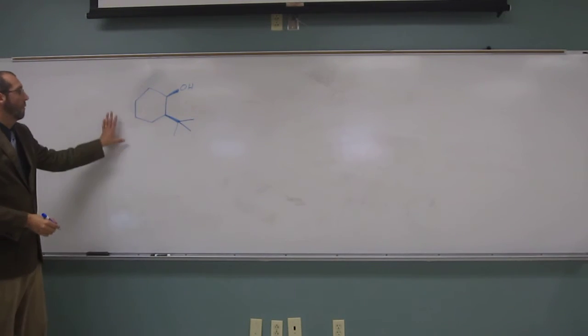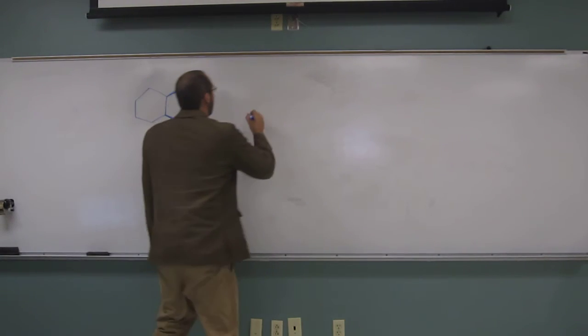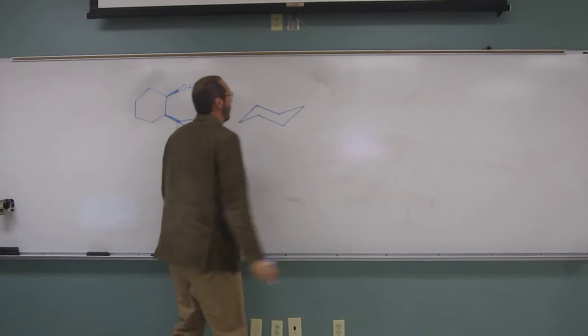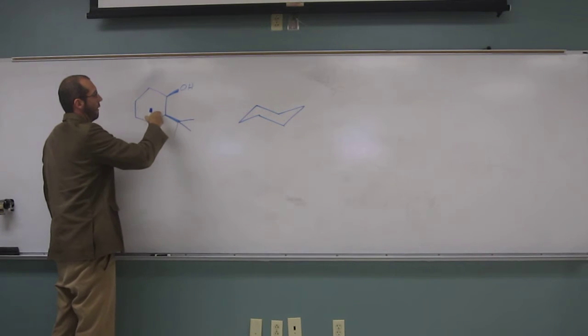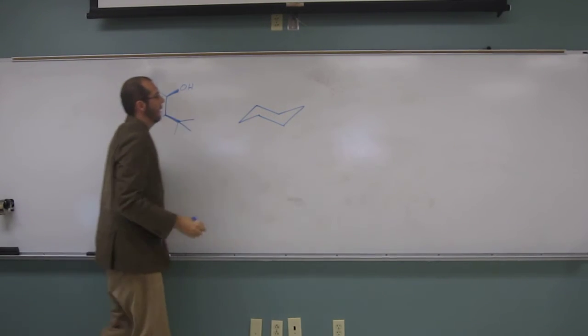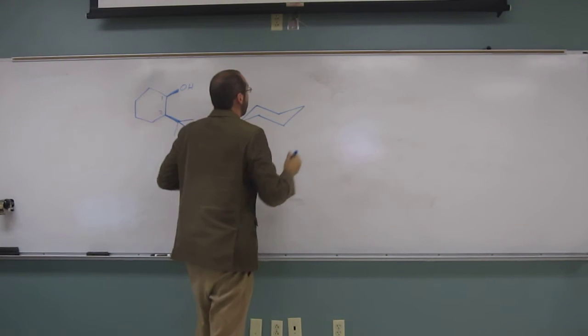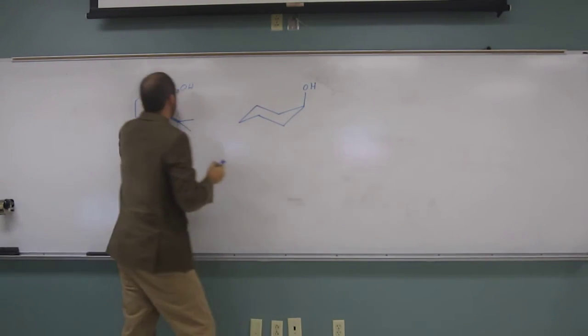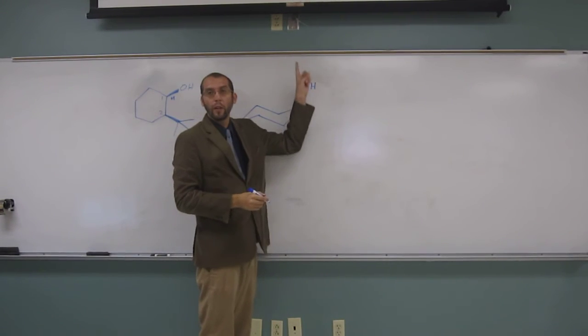So now we're going to translate this into a chair structure. So I just make this one one, this one two, like that. This one one, this one two. So we'll do this one where, since this is up, right, at the up arrow, that means it's going up, so it's axial.